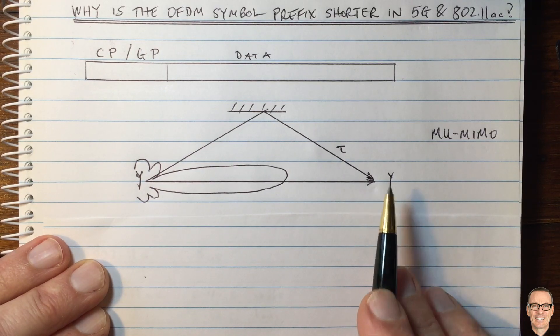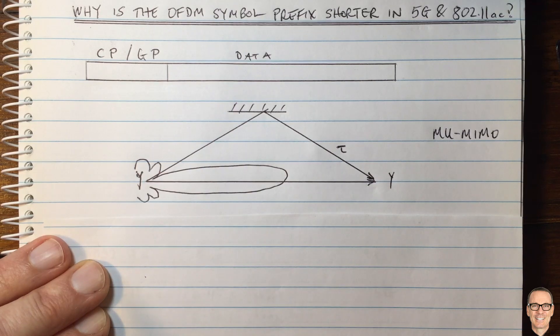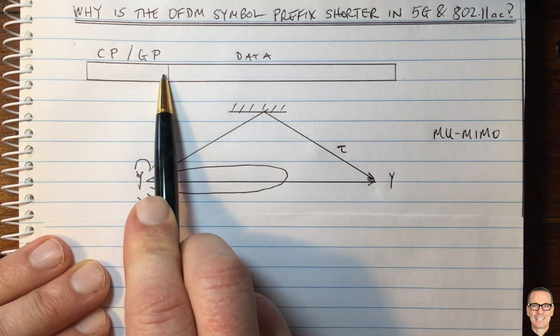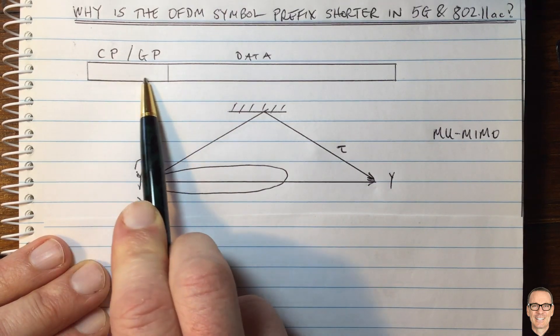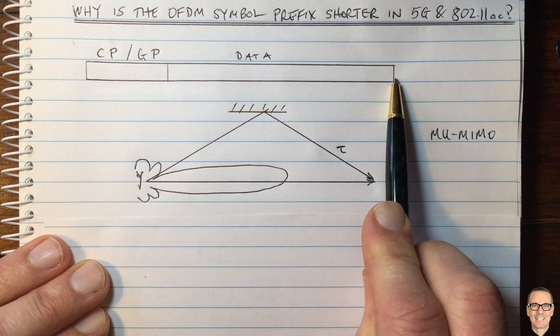These are two reasons why we can have a shorter prefix in these new standards. The benefit of having a shorter prefix is you spend less time on the prefix and more time on the data.